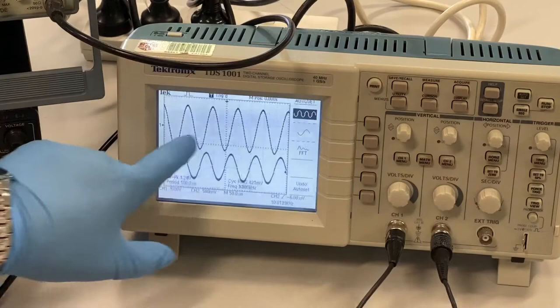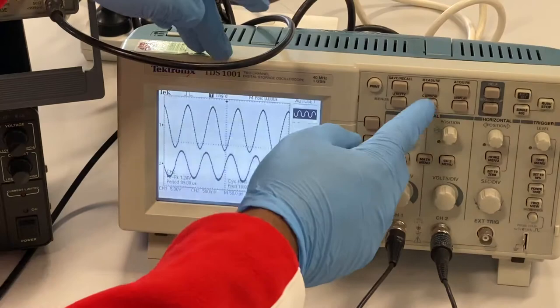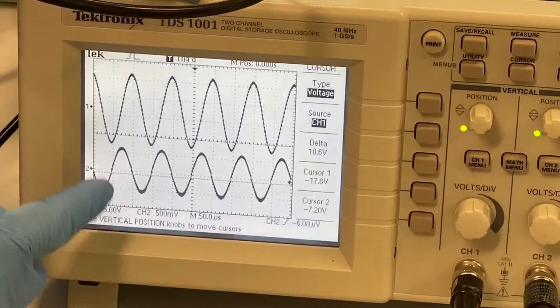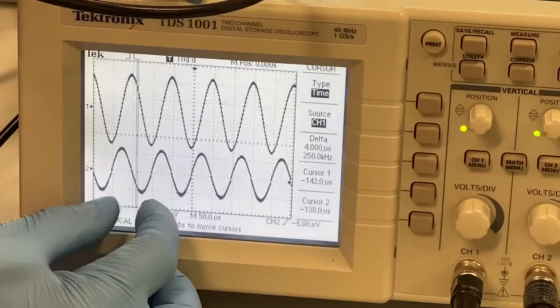So we will just press cursor, then we get onto the type of cursor. I'll just increase this so you can see. Then there are types of cursor we will choose, not voltage cursor, because these are two voltage cursors, this line and this line. But what we need is the time cursors. We get two cursors in the x-axis.